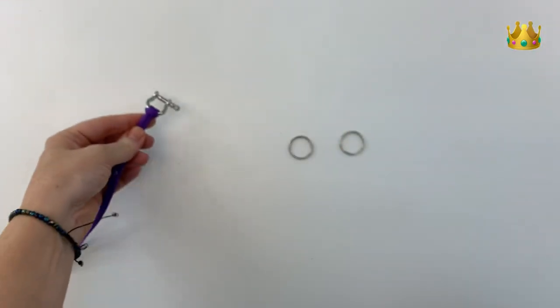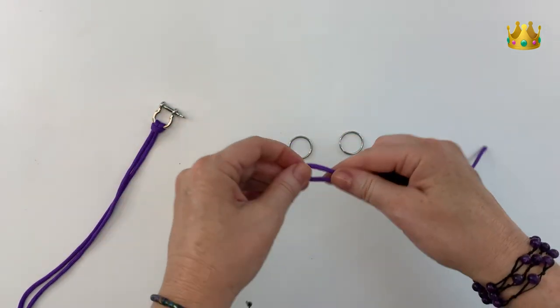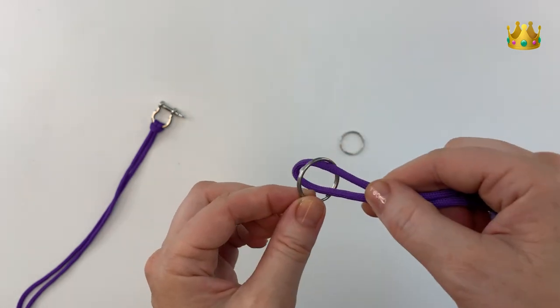Starting with the cow hitch and we're placing ours onto a little key ring. Start by making a loop or bend in your rope or paracord and then place the loop down through the key ring.